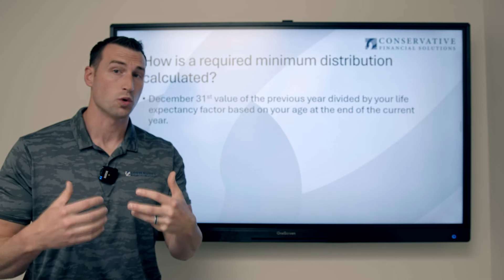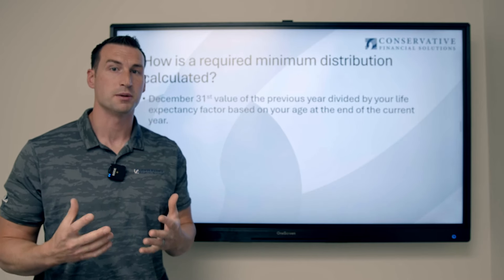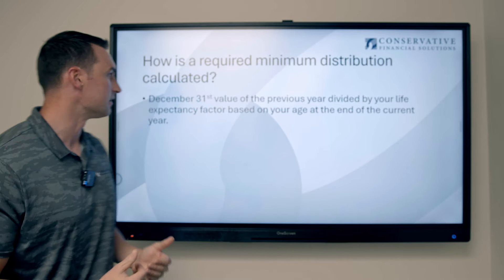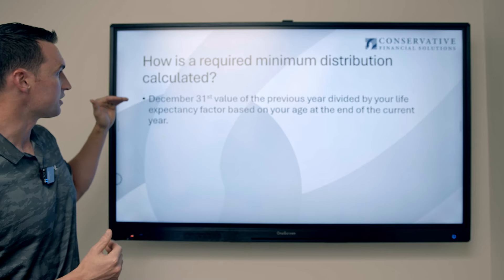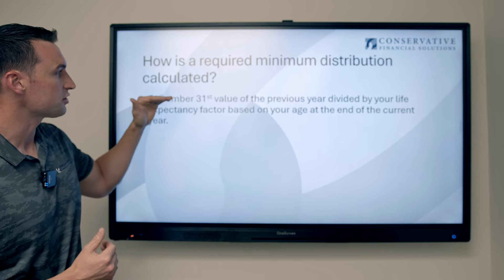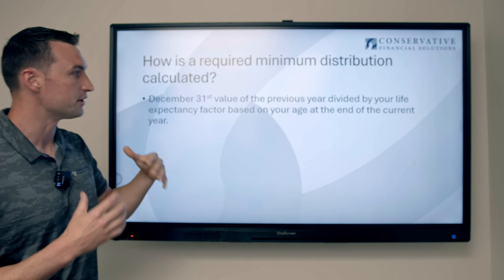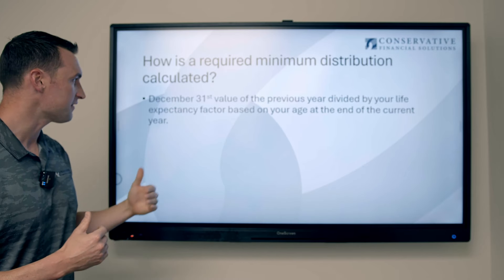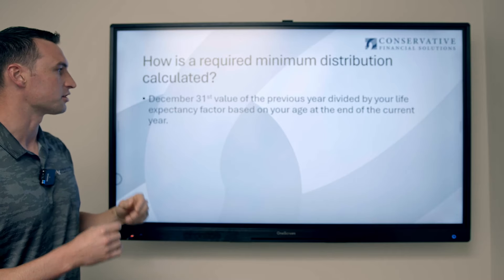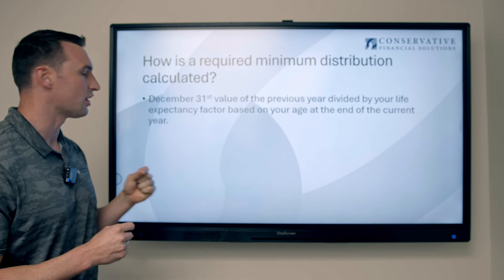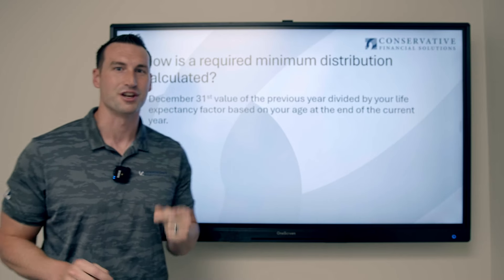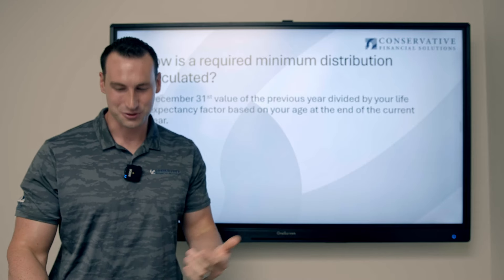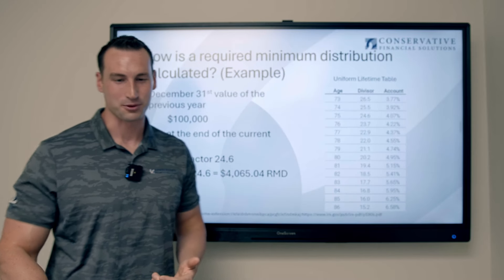Now, how is your required minimum distribution calculated? You take your December 31st account value from the previous year, divided by your life expectancy factor based on your age at the end of the current year. To make that less confusing, let's walk through an example.